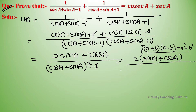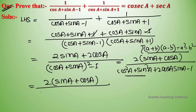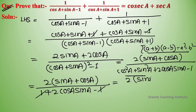So this equals 2 cos A upon cos A plus sin A plus 2 cos A sin A minus 1. Simplifying further, the numerator is 2 sin A plus cos A, and the denominator is cos A plus sin A. This equals cos A divided by sin A plus 2 sin A plus 1 plus cos A.